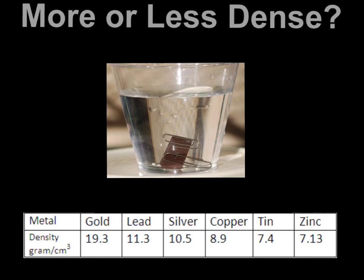Do metals tend to be more dense or less dense? Think about when we've done the density labs — did they sink or did they float? Write down what you think metals are, more or less dense, in your notes.